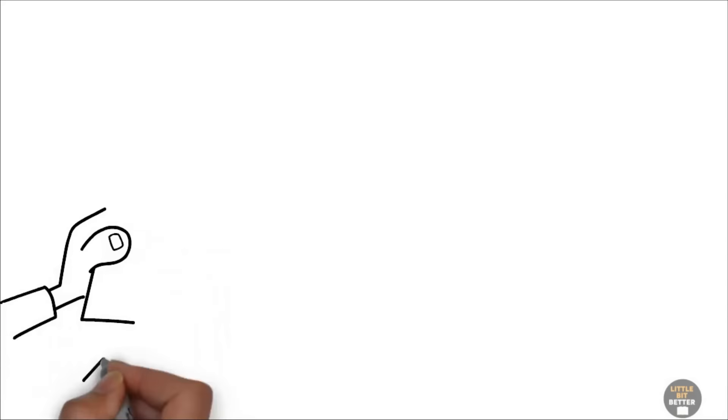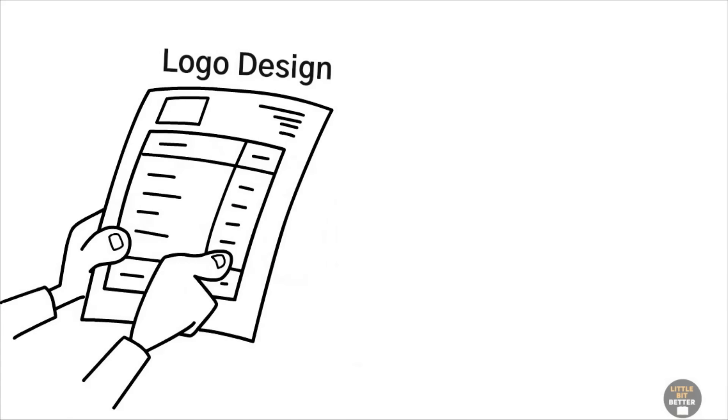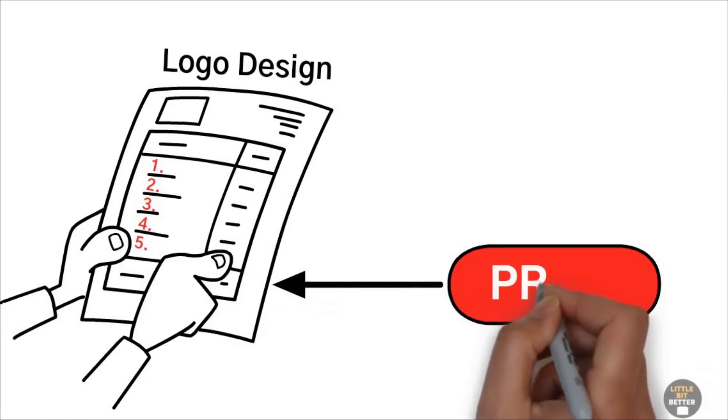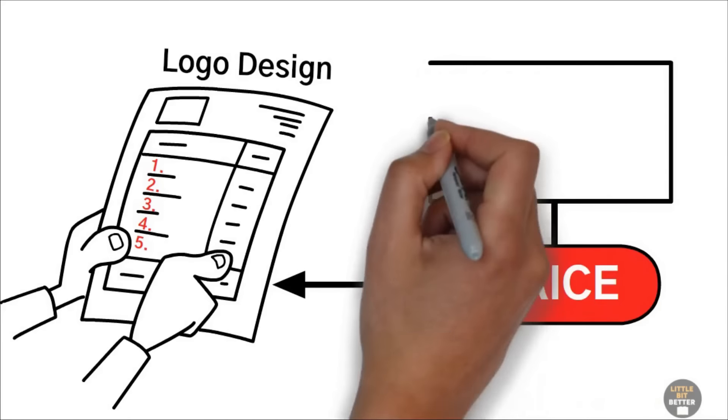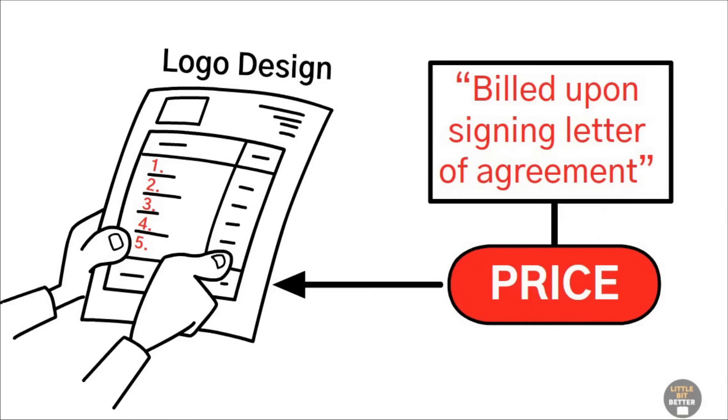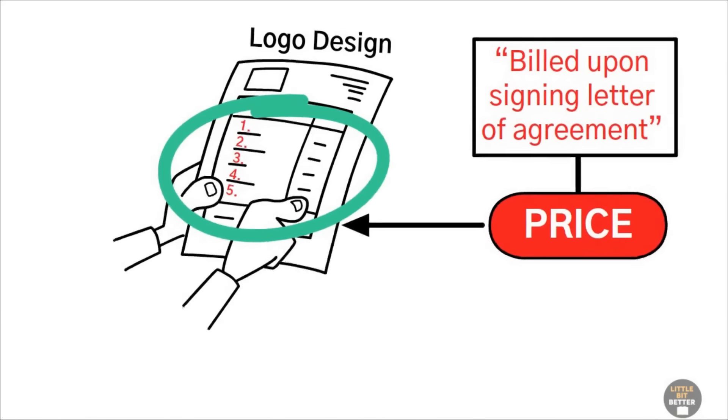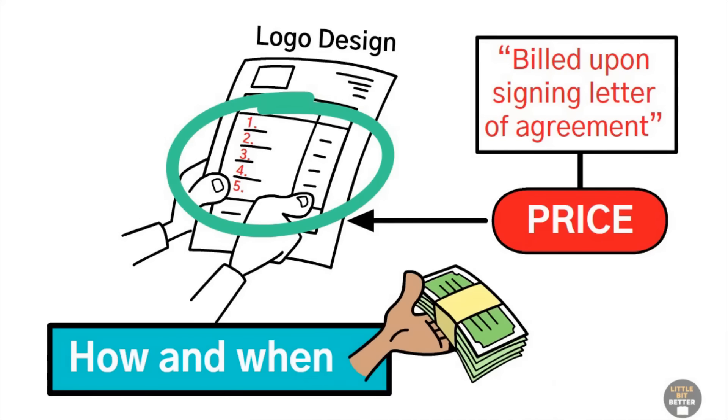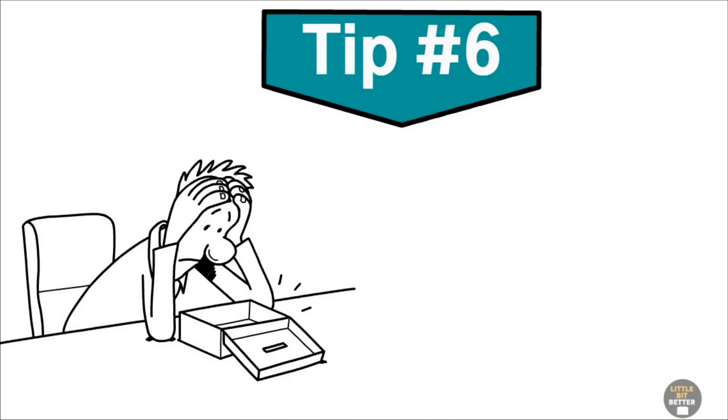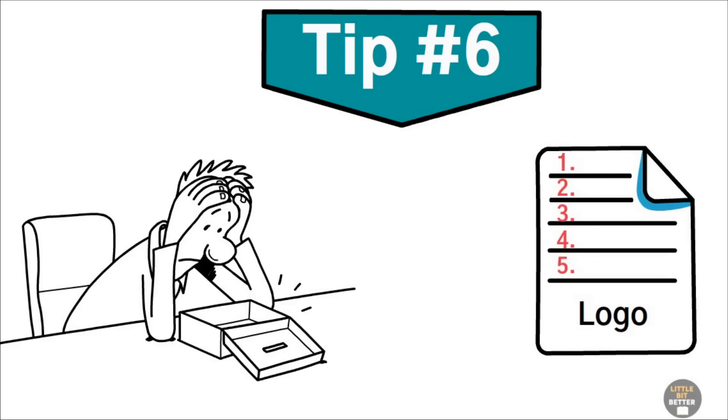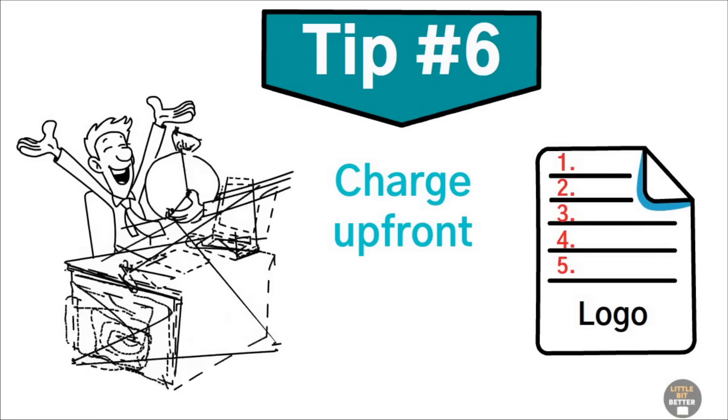Ted then offered his instructions for the week. He told Alex to keep pitching his five-step logo design process. This time, he told him to include the price on the sell sheet with the words, Build Upon Signing Letter of Agreement. When it's your product, you get to decide how and when to get paid. To recap tip number six, avoid the cash suck. Once you have standardized your service, charge up front to create a positive cash flow cycle.